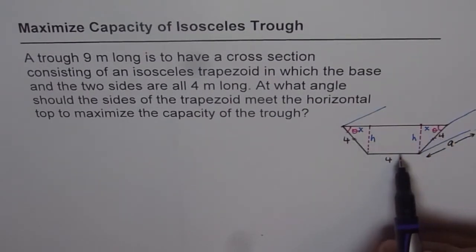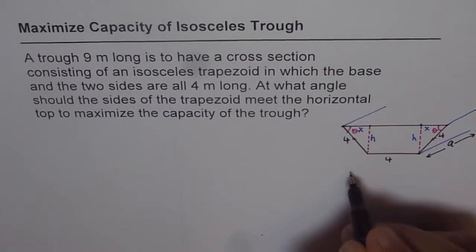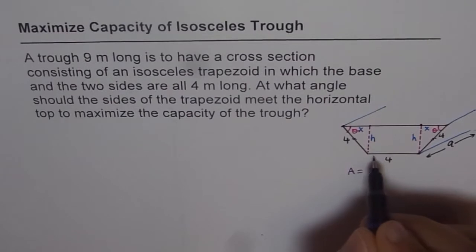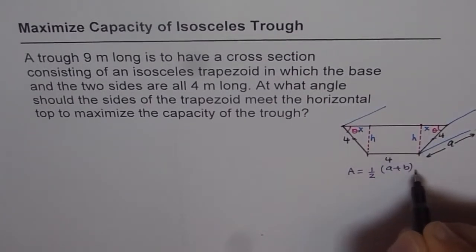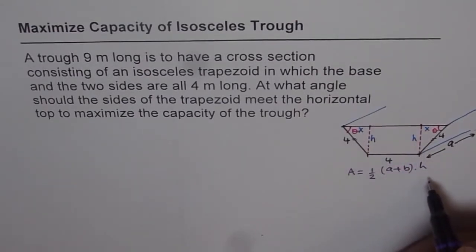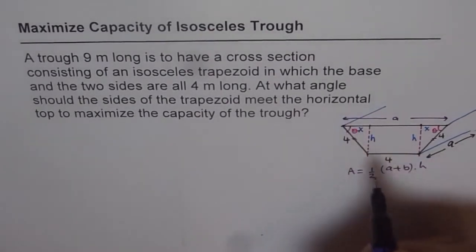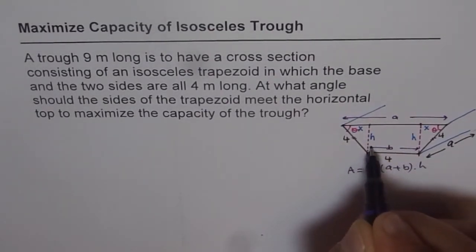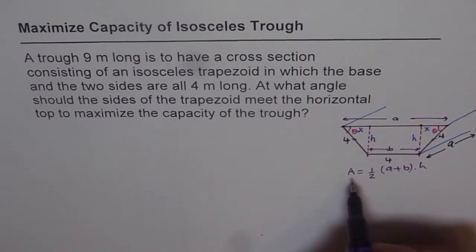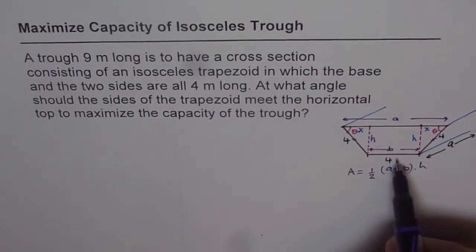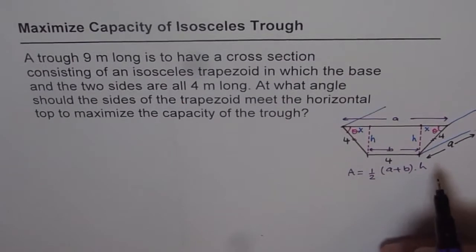To maximize the capacity really means to maximize the cross-section area, since the length is fixed. So the cross-section area is to be maximized. It is a trapezoid, and the area of a trapezoid is half of the sum of the two parallel sides — let's call them a and b — times the height. Once we get the expression for area, we write the equation in terms of one variable: theta.